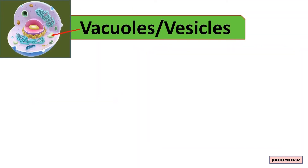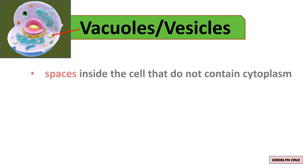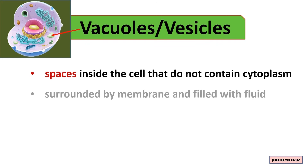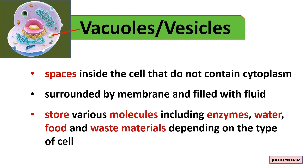Vacuoles in animal cells are small and are called vesicles. Vacuoles are spaces inside the cell that do not contain cytoplasm. They are surrounded by membrane and filled with fluid. Vacuoles store various molecules including enzymes, water, food, and waste materials depending on the type of the cell.